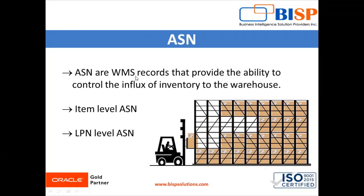In other words, ASNs are WMS records that provide the ability to control the influx or inflow of inventory to the warehouse. You can run your reports on all your Advanced Shipment Notices — from host, supplier, or manually created at receiving — for tracking or visibility. Item-level ASN gives us information about the item and quantity, or SKU and quantities. SKU is nothing but a Stock Keeping Number.